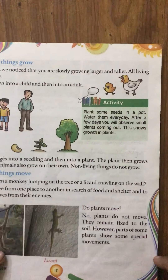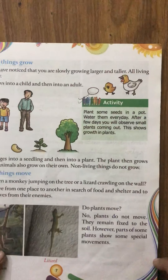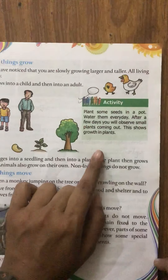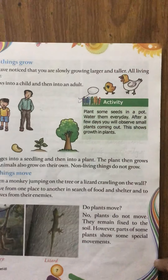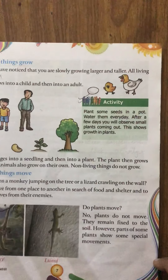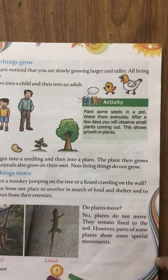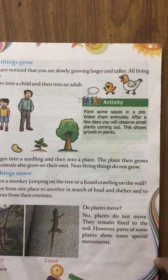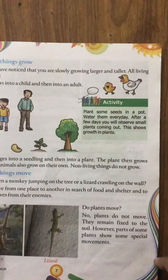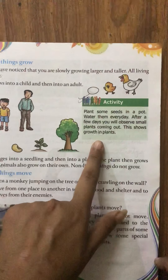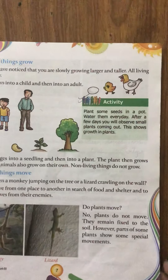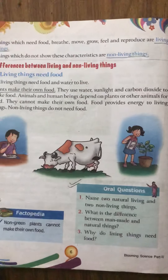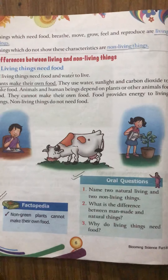Here is an activity: plant some seeds in a pot and water them every day. After a few days you will observe a small plant coming out — this shows growth in plants. Take a small pot, put some mud in it, add seeds like wheat, and water it every day. After a few days or a week you will see a small plant coming out. This is very interesting — just do it at home. Thank you very much, children.